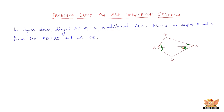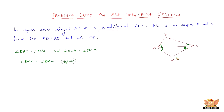Since diagonal AC bisects angle A and angle C, we have angle BAC equal to angle DAC, and angle BCA equal to angle DCA. In triangles ABC and ADC, angle BAC equals angle DAC, which is given. You can see that the angles are marked by single lines, meaning they are equal. The angles marked by double lines are also equal.